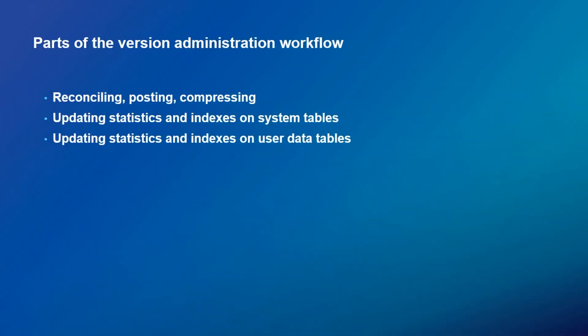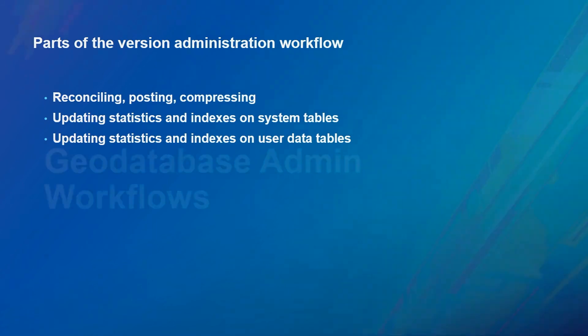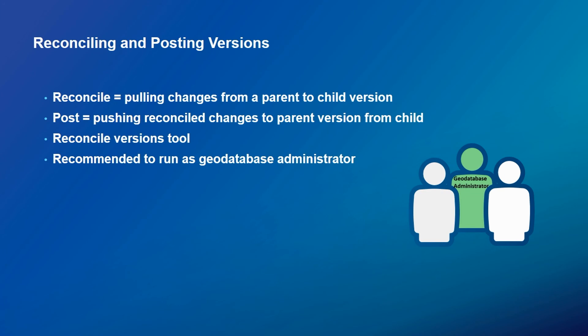Continuing with the geodatabase admin workflows, we'll talk about what is our role with version management. In simple terms, reconcile and post is the process of pushing your edits between versions down to the default. When you do compress, those edits go from the default to the underlying tables. We have a Reconcile Versions tool to automate this process. We recommend running this tool as the geodatabase administrator in an automated maintenance routine, because this user can see all versions and has access to all data.